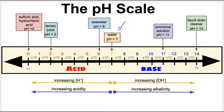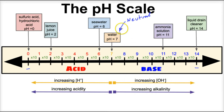Right at a pH of seven, we have a neutral solution like water. If it has a pH of seven, it has the same concentration of H+ ions as it does hydroxide ions floating around in that aqueous solution, and therefore is neutral. Water has the same concentration of hydrogen ions as it does hydroxide ions floating around, and therefore is neutral.